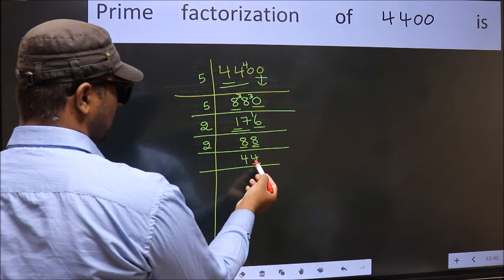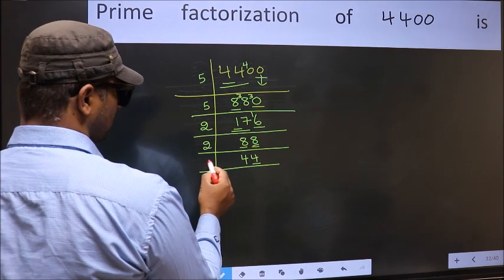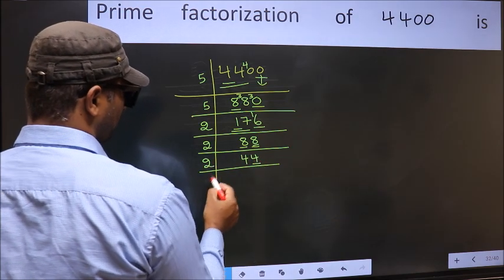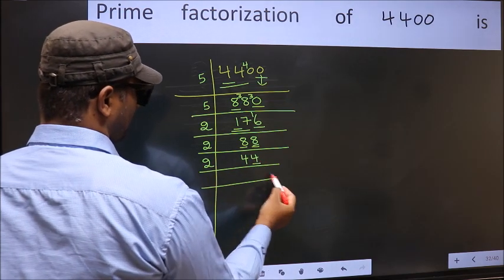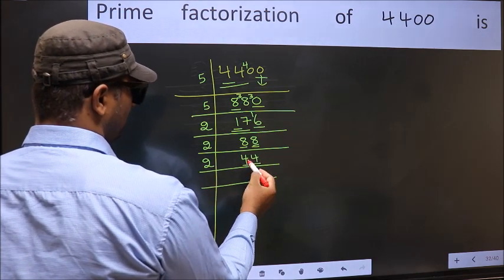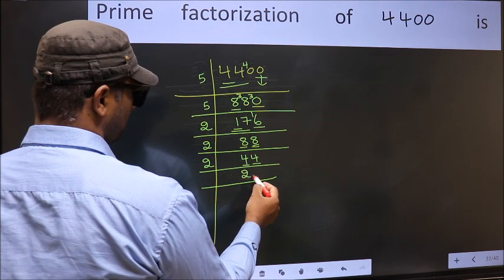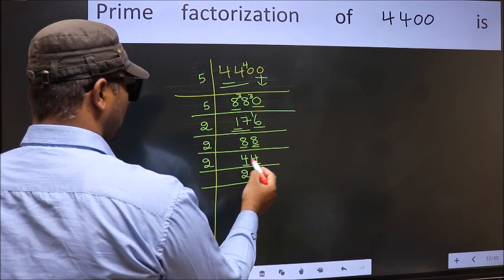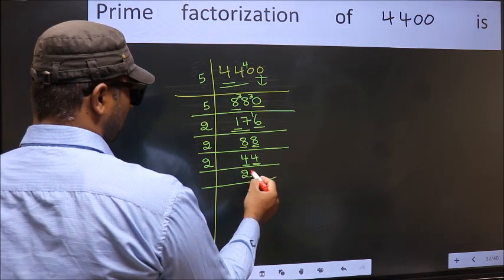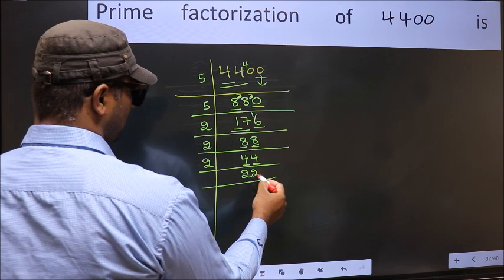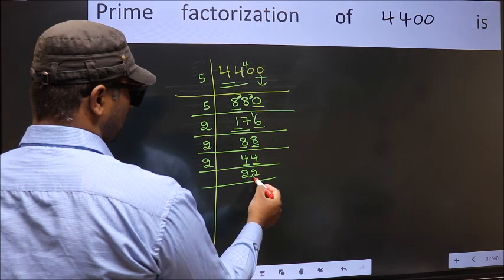Now the last digit is even, so take 2. First number 4. When do we get 4 in the 2 table? 2 twos = 4. The other number 4: when do we get 4 in the 2 table? 2 twos = 4.